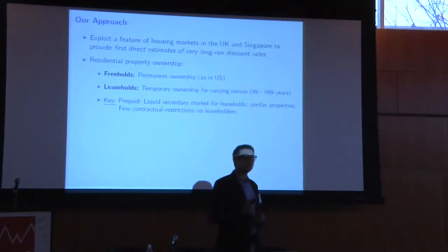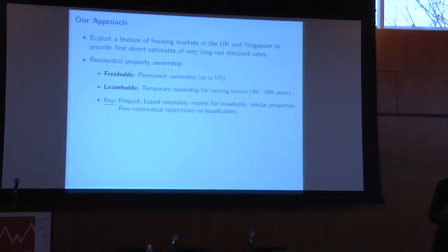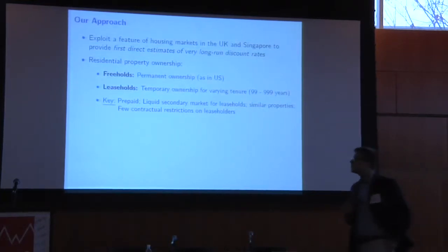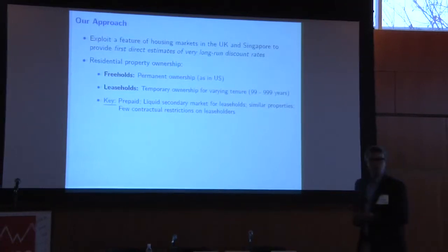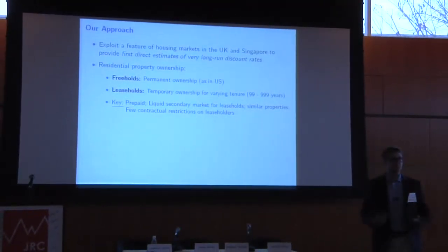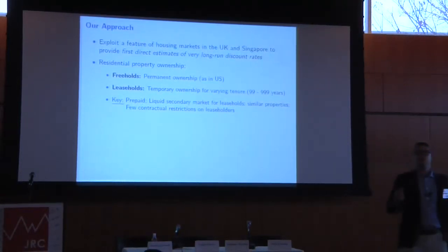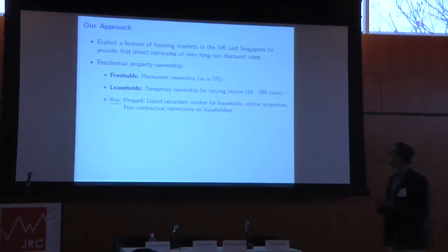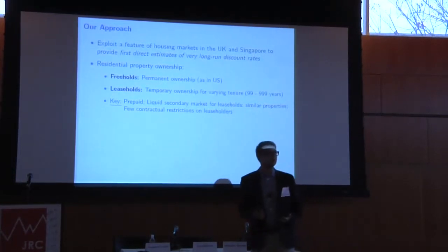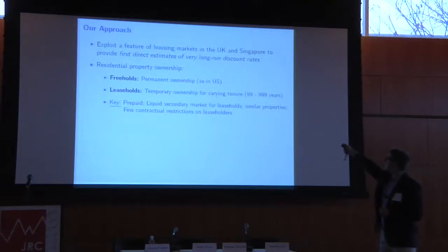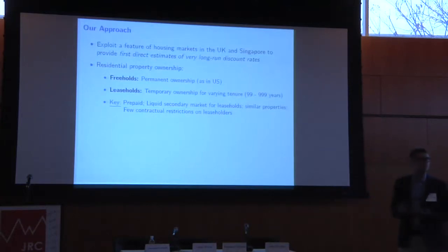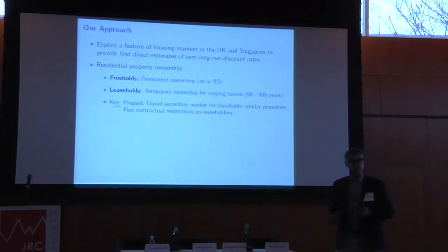What we use in this paper is a feature of residential real estate markets in both the UK and Singapore to provide what we think are the first direct estimates of very long-run discount rates. Residential property ownership in these two markets comes in one of two forms. The first is a freehold contract — essentially permanent ownership of the asset, very similar to owning property in the US. In addition, properties also sell as leasehold contracts, which are temporary ownership contracts granting ownership for an initial duration from anywhere between 100 years up to 1,000 years.